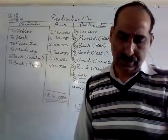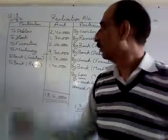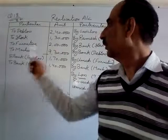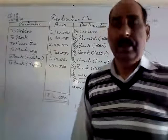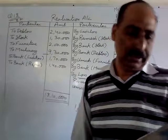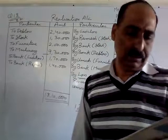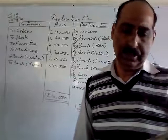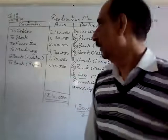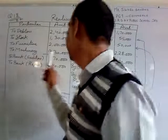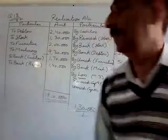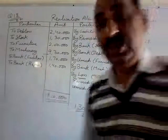Stock 1,30,000 rupees transfer karna hai. Uske baad mention kiya gaya hai furniture 2,00,000 rupees — to furniture 2,00,000 rupees. Aur saath hi question mein machinery 9,30,000 rupees — to machinery 9,30,000 rupees realization account mein transfer karni hai.